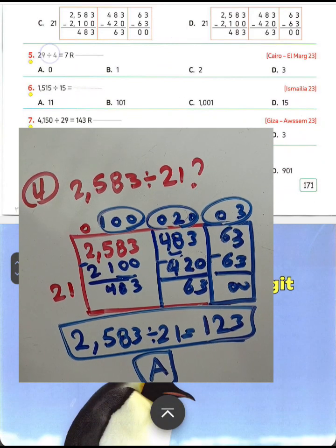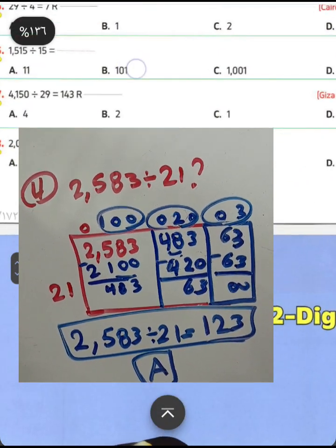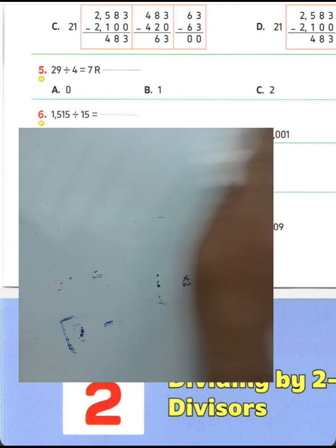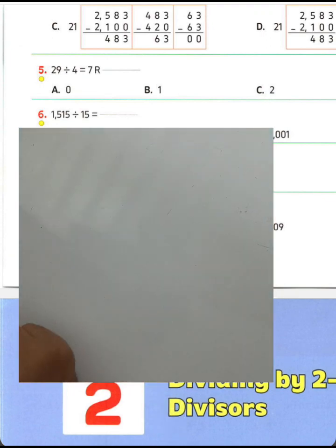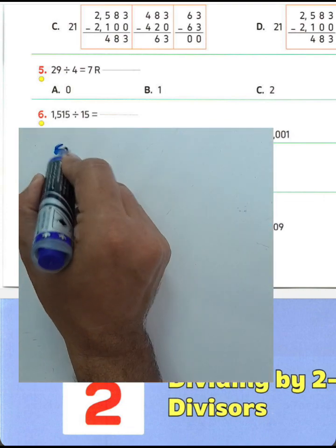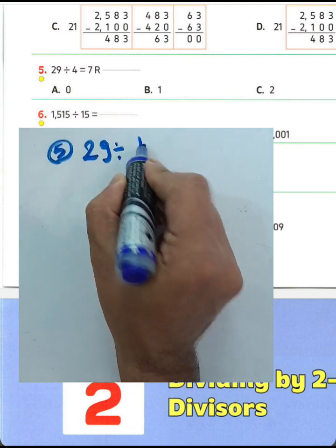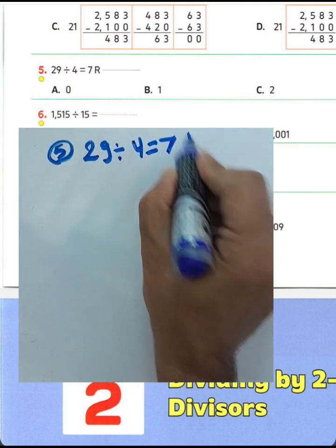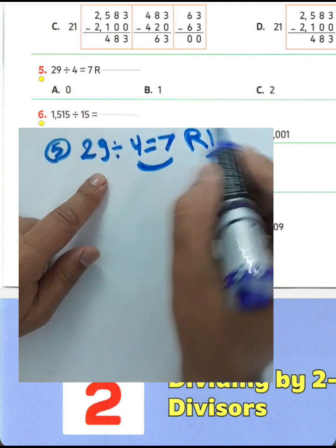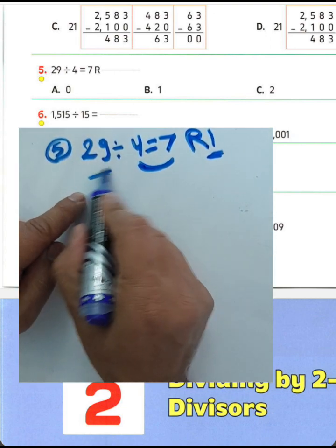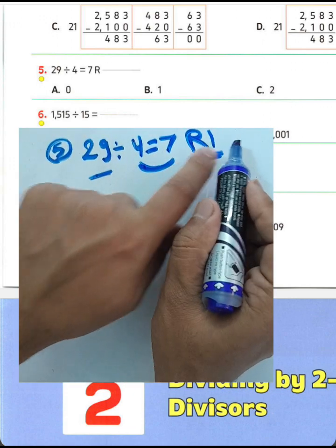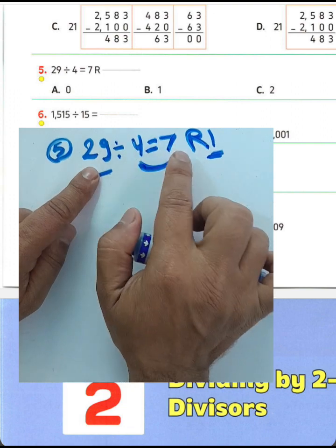Question number 5: 29 divided by 4 equals 7 and remainder 1. We know 4 times 7 equals 28, and 29 minus 28 equals 1. So: 29 is the dividend, 4 is the divisor, 7 is the quotient, and 1 is the remainder. The dividend equals divisor multiplied by the quotient plus the remainder.